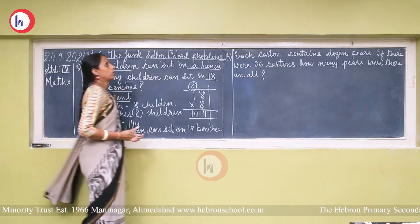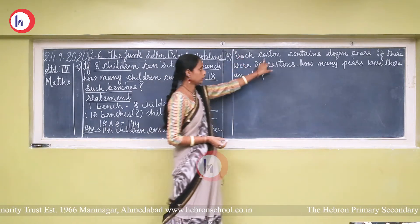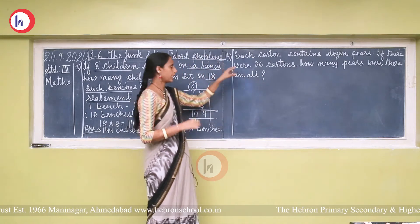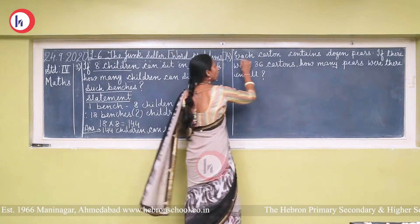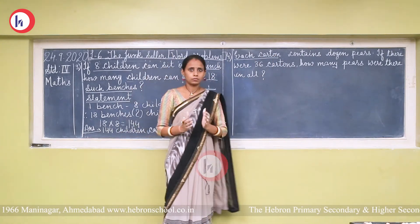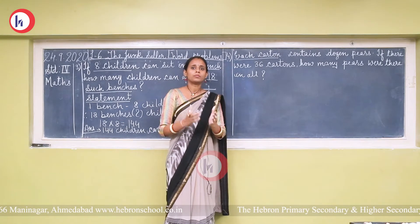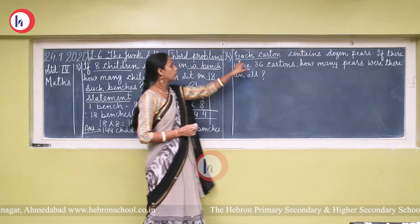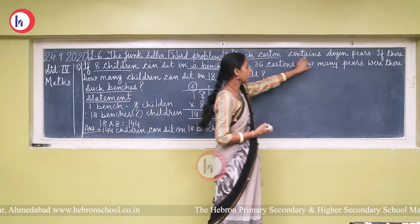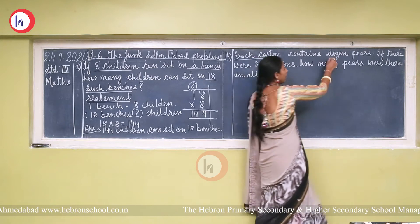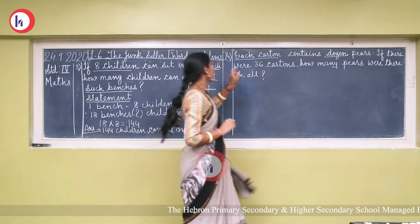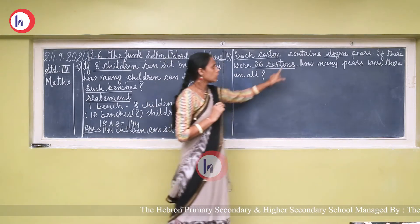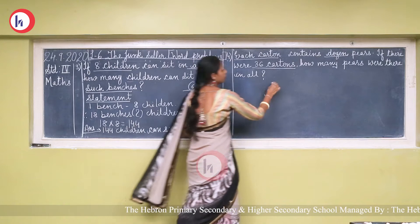Next question: Each carton contains a dozen pairs. If there were 36 cartons, how many pairs were there in all? 'Each' means one. A carton is like a box. One carton contains a dozen — that is 12 — pairs. There are 36 cartons. We need to find the total number of pairs.